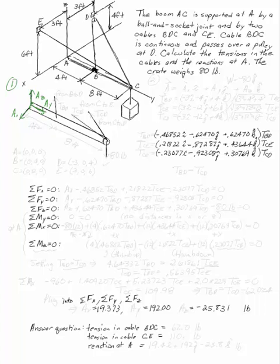I'm also going to have the tensions in the two cables. This is what I'm going to call TBD - it goes from B to D. I'm going to have a tension in the cable that goes from C to E, which I'm going to call TCE, and a tension in the cable TCD, which goes from C to D.